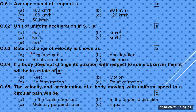The average speed of a leopard is about 90 km/h. All types of acceleration — average, uniform, or variable — have the same SI unit. The rate of change of velocity is known as acceleration.